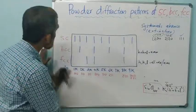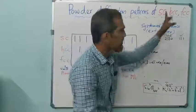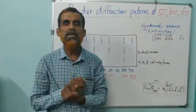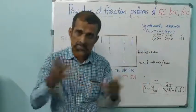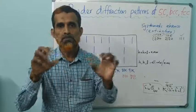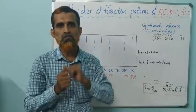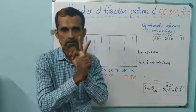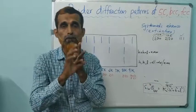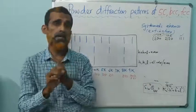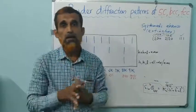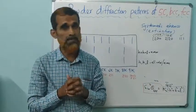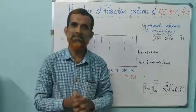So that is about powder diffraction patterns of the three cubic lattices. In the next class, we will go to specific examples of three crystals: cesium chloride, sodium chloride, and potassium chloride — their powder diffraction patterns. We will analyze them in the next class.